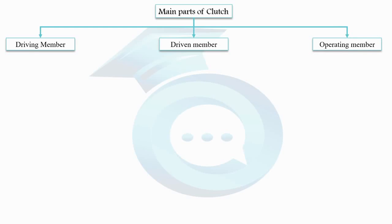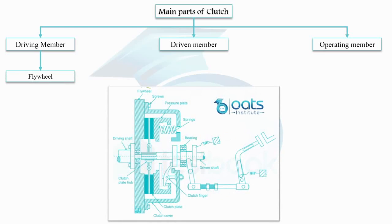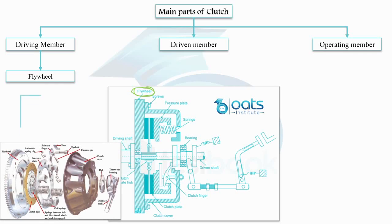Firstly, we have the driving member. This component consists of a flywheel, which is securely mounted on the engine's crankshaft. The flywheel is fastened to a cover that houses essential parts such as a pressure plate, pressure springs, and release levers. It's important to note that the flywheel and the cover assembly rotate together as a unified unit.